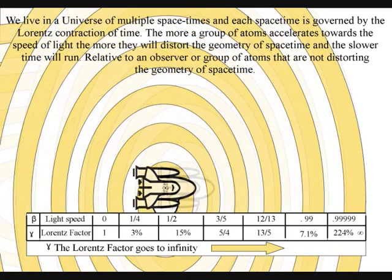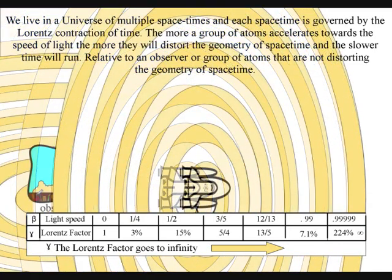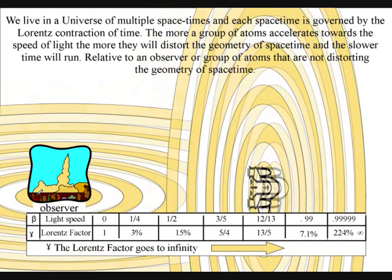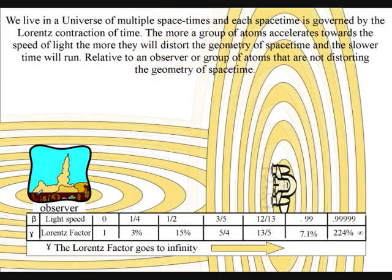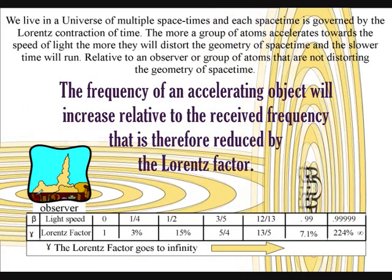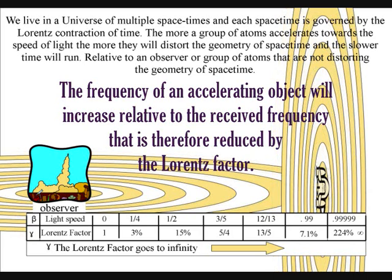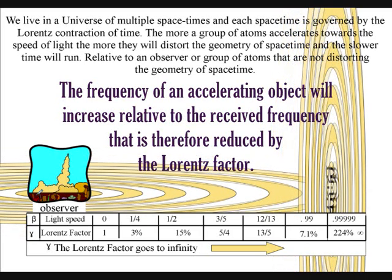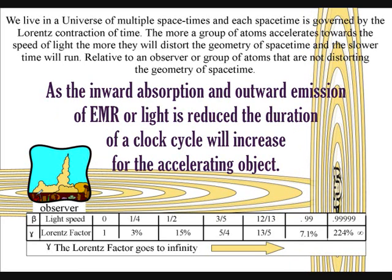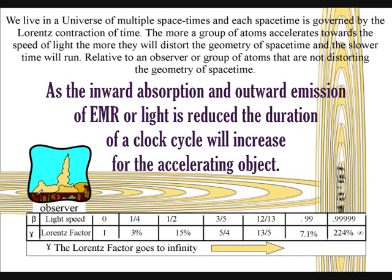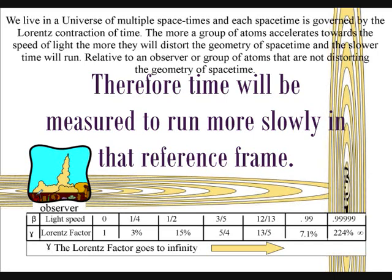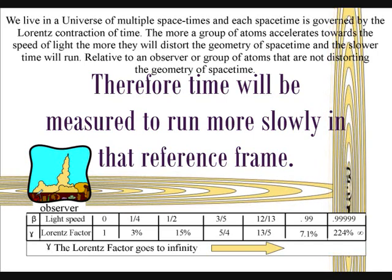We have time dilation for an object accelerating towards the speed of light and gravitational time dilation around objects of great mass because the greater the momentum the shorter the wavelength and the higher the frequency. The frequency of an accelerating object will increase relative to the received frequency that will therefore be reduced by the Lorentz factor. As the inward absorption and outward emission of electromagnetic radiation is reduced, the duration of a clock cycle will increase for the accelerating object and time will be measured to run more slowly in that reference frame.